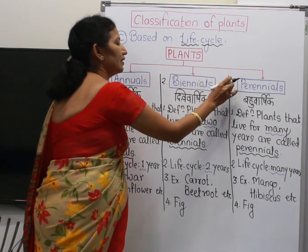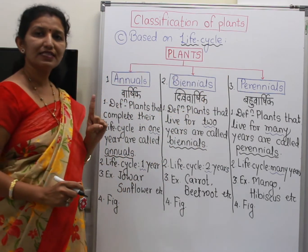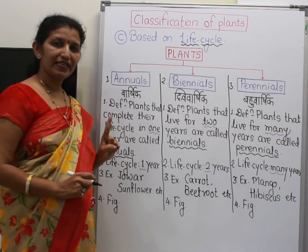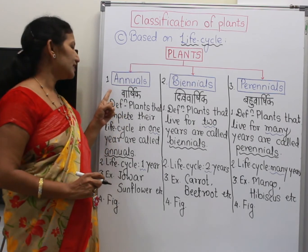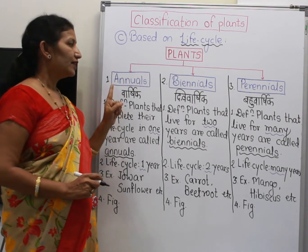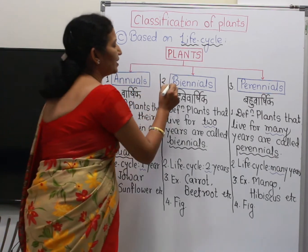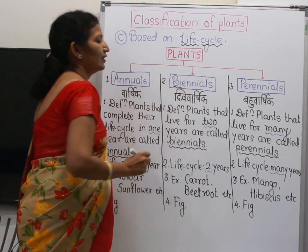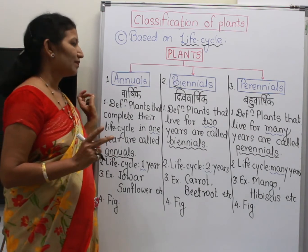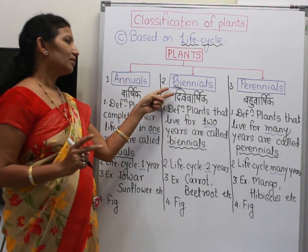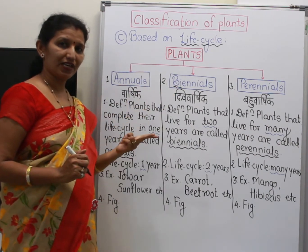The name indicates 'annual' — annual means one year. In Marathi, annuals are called varshik. Biennials — the prefix 'bi' means two. So biennials are called dvivarshik.